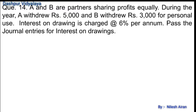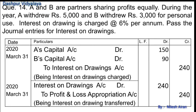Pass the journal entries for interest on drawings. Two journal entries are passed: the first is A's capital account debit, B's capital account debit to interest on drawings account. Then interest on drawings account debit to profit and loss appropriation account.